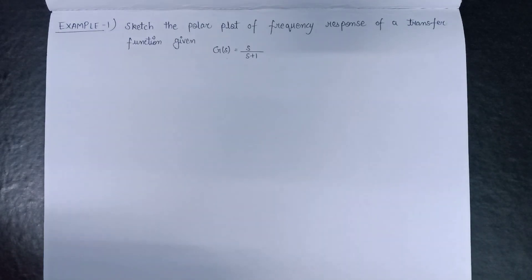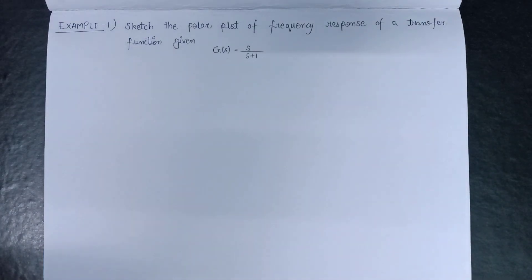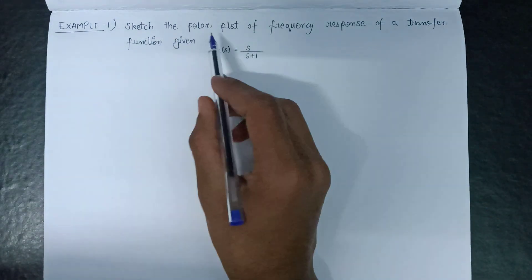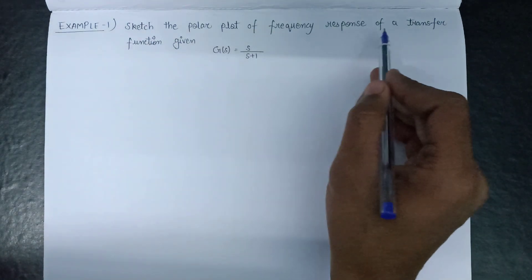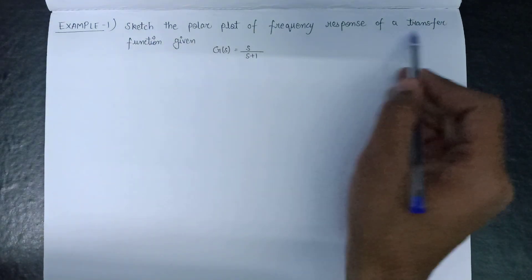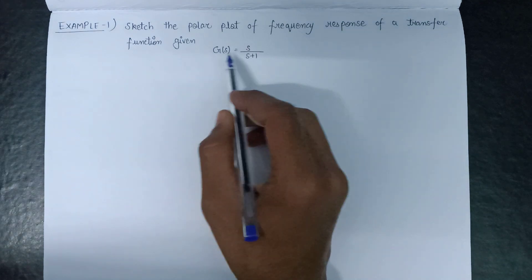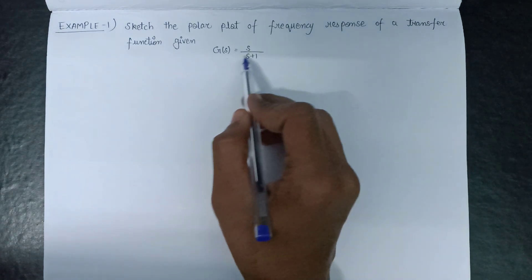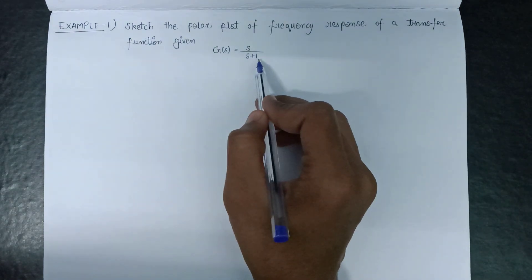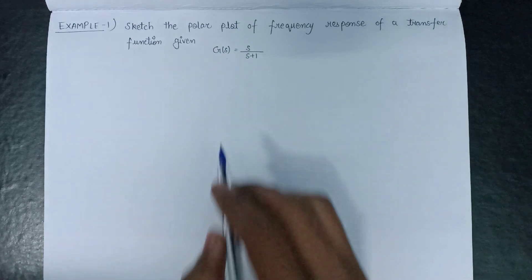Welcome all. In this lecture, we are going to solve example number 1: sketch the polar plot of a frequency response of a transfer function which is given as G(s) equals s over s plus 1.